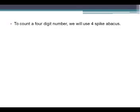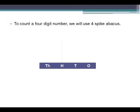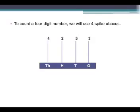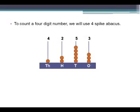Now moving on to a 4 digit number. We will add 1 more spike that will represent the 1000s place. For example, 4253: the digit at the 1s place is 3, so we will put 3 beads. At the 10s place we will put 5 beads, at the 100s place we will put 2 beads, and at the 1000s place we will put 4 beads.